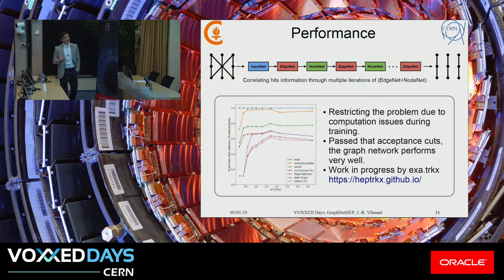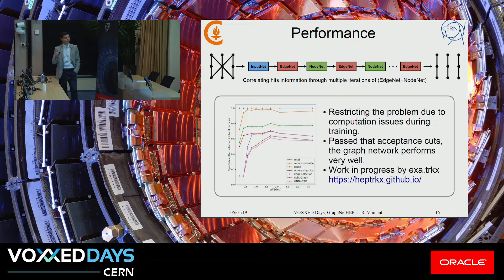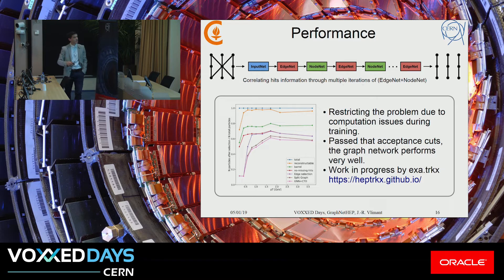We've done this in various ways. Here is a schematic with sequences of edge nets and node nets so that we can connect layers through the detector, passing some acceptance cuts that we have to apply due to computation issues. That's one of the remaining challenges — we need people to work on these kinds of things. Within the TrackX project and also at CERN, there is an effort for this. Once past those acceptance cuts, the model is actually working really well to find the good tracks from those hits.